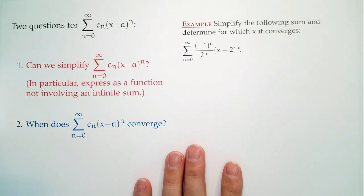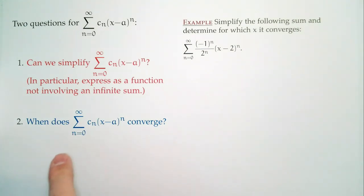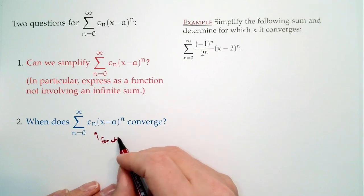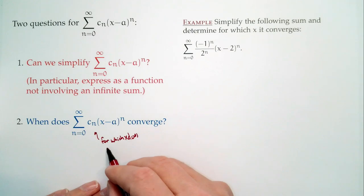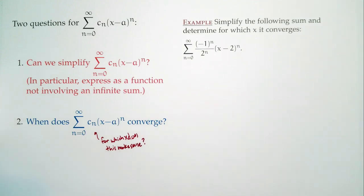Now what do we care about? There are two big questions coming into play. The first big question is: can we simplify this expression? In other words, I have this nice big infinite polynomial — sum of c_n times (x minus a) to the n — can I find a nice, easy expression that doesn't involve an infinite sum? The other question is: when does it converge? For which x does this make sense? Because you can write down anything, but it might be nonsense depending upon what values of x you choose.